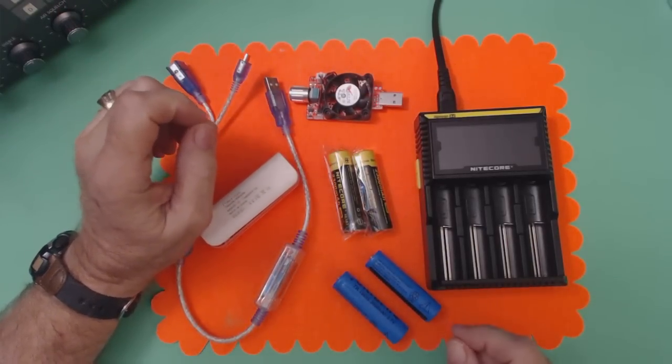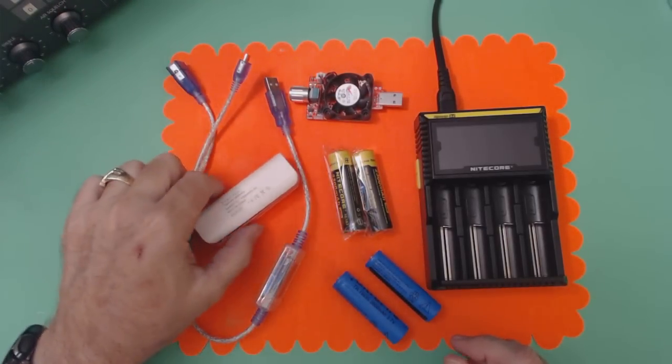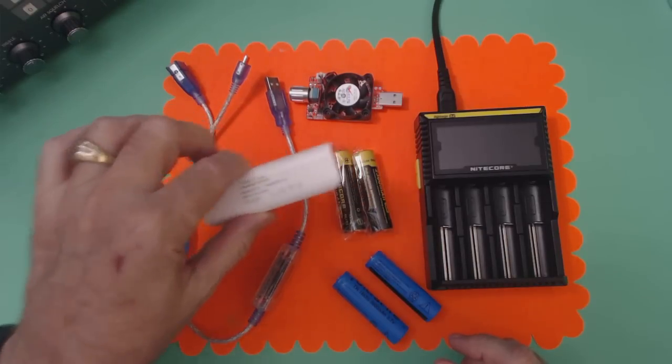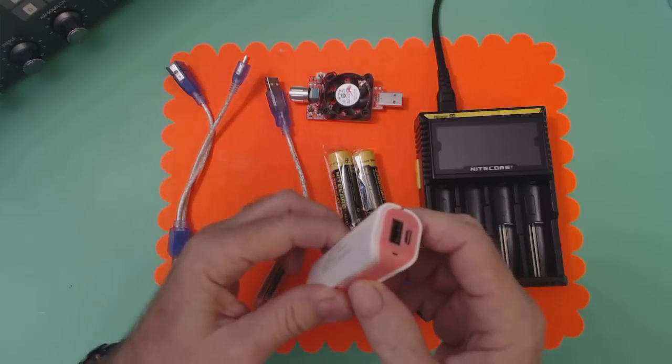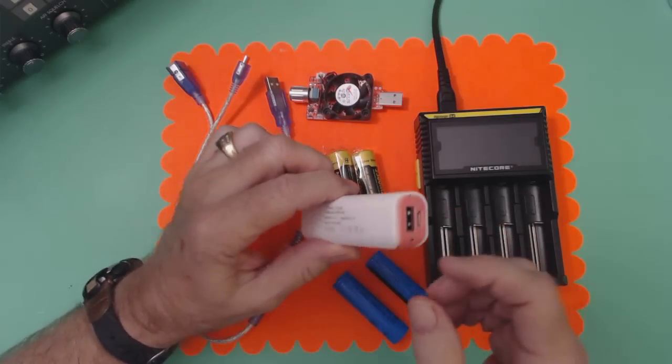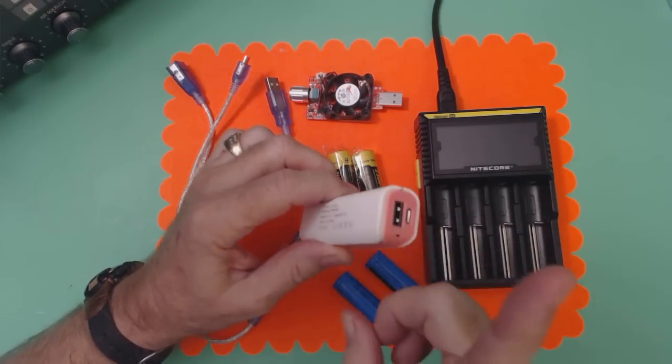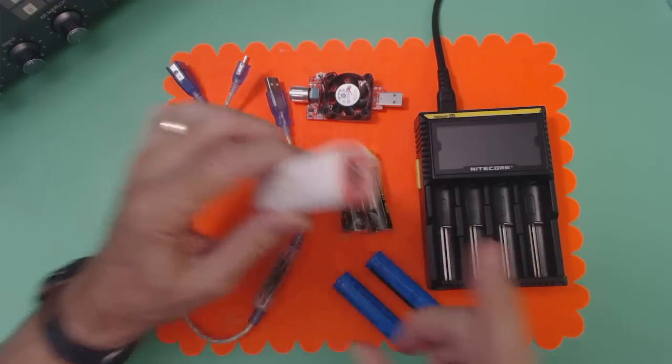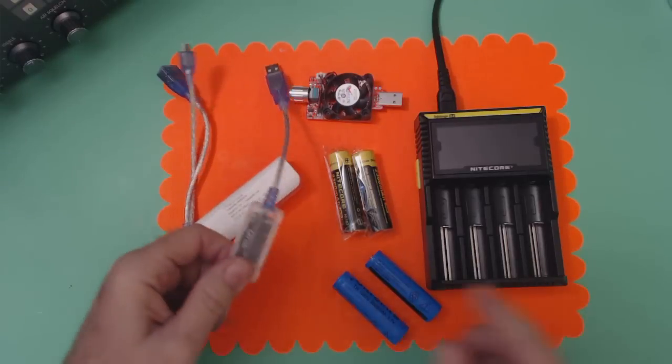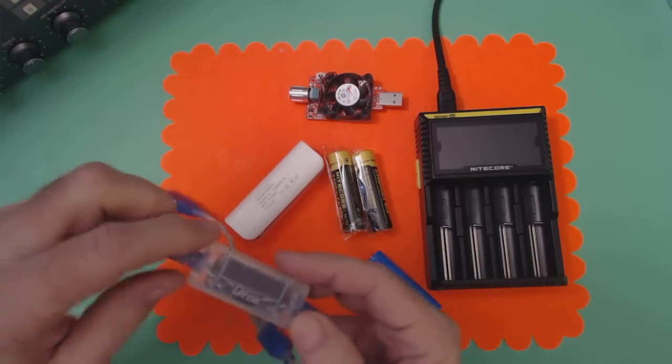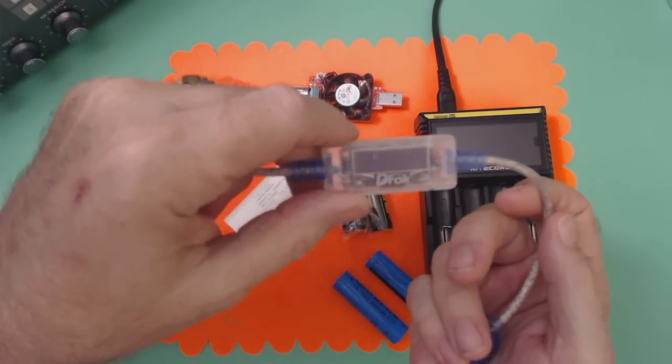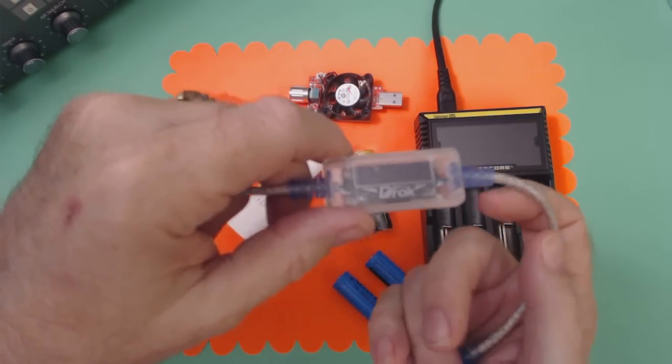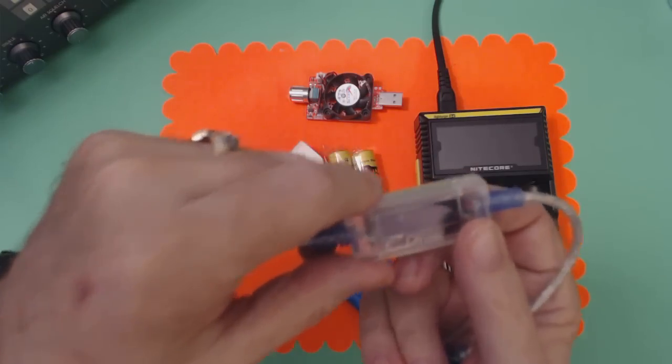Then we will individually test them using this little guy here as a holder. This is one of those take-apart ones that you can put your own batteries in. We'll put one battery in it, use this as a holder, and then we'll use our DR-OK tester which will give you an idea of the capacity of the battery.